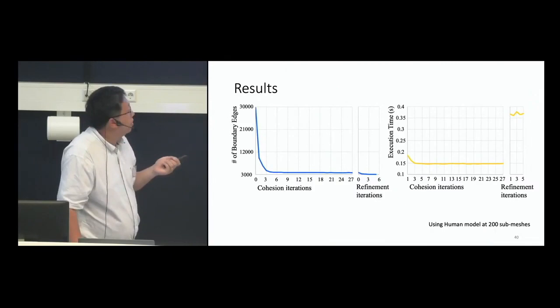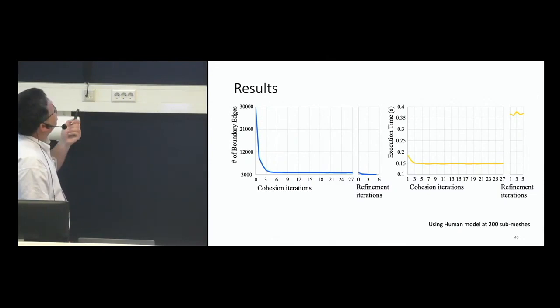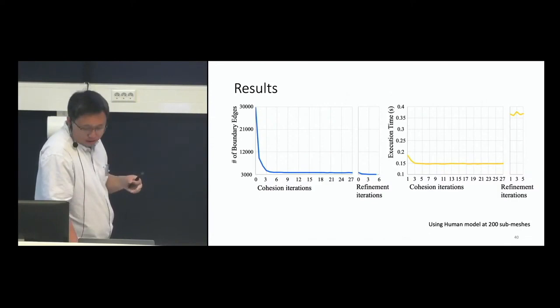We also examined timing results. For the coherent step using a human model with 200 submeshes, the first few iterations do most of the work — many triangles swap labels — and then the number of boundary edges reduces and stabilizes. The refinement step is more costly per iteration in execution time because we look into neighbors, but the number of refinement iterations is much less.